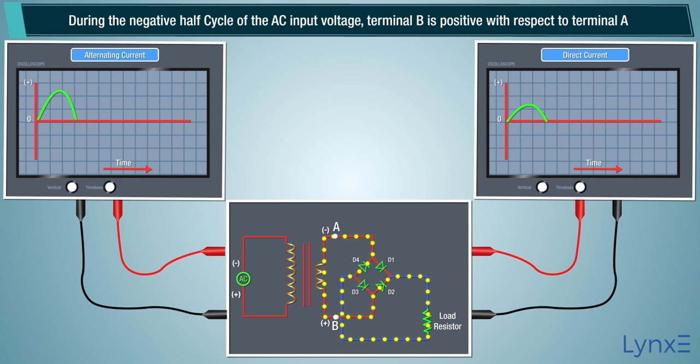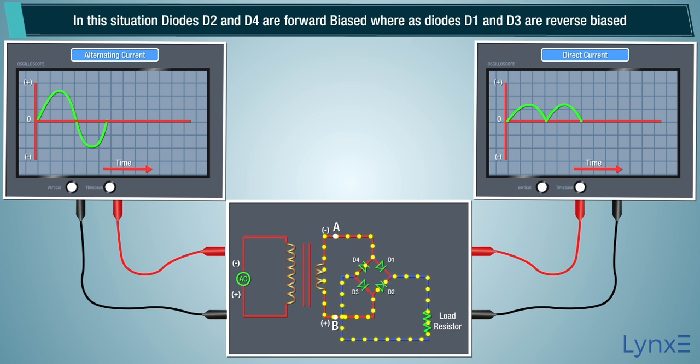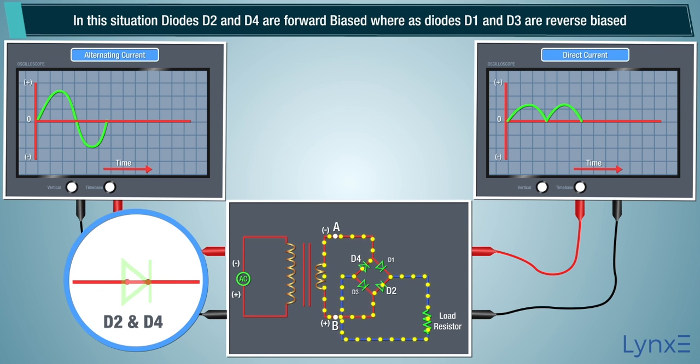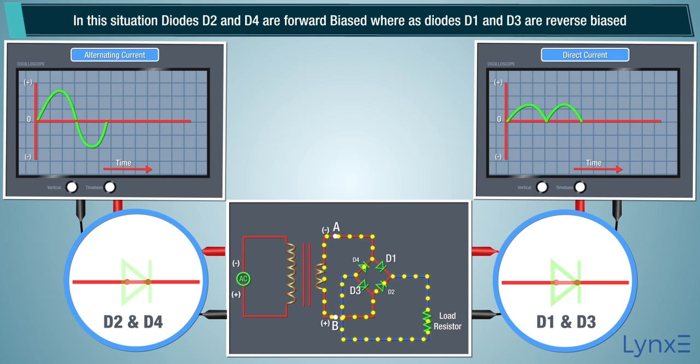During the negative half cycle of the AC input voltage, terminal B is positive with respect to terminal A. In this situation, diodes D2 and D4 are forward biased, whereas diodes D1 and D3 are reverse biased.